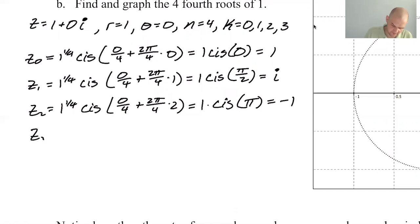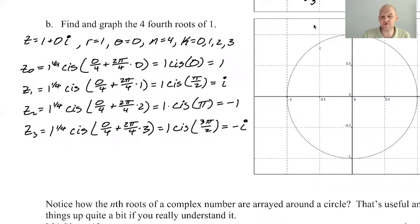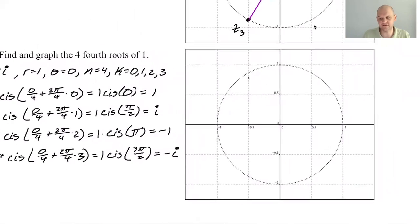And then z₃, 1 to the 1/4. So that part doesn't change. Most of this doesn't change. 2π over 4 doesn't change. This will be times 3. So this will be 1 cis. We're just adding π/2. So 3π/2. And that gives me negative i. And now, if I kept going, I would just duplicate 1 again. And then if I went another round, I would just duplicate i. And you just keep duplicating.